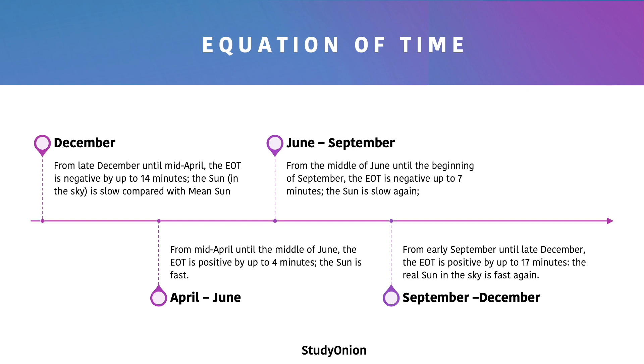From June to September, from the middle of June until about the beginning of September, the EOT is negative again by up to seven minutes, which just means that the sun is slow.